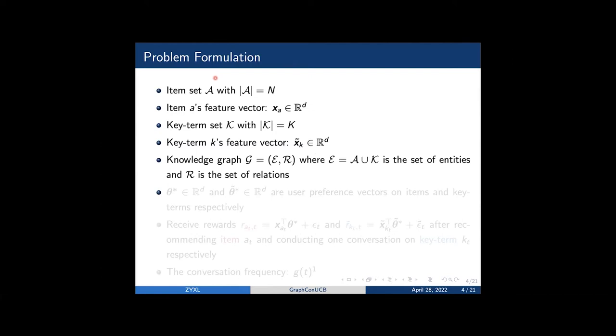We now give a problem formulation of our study. We assume there is an item set whose size is n, and for each item a, it has a feature xa in rd. There is also a key term zk, and each key term k has a feature vector tilted k also in rd.